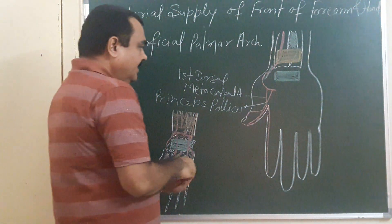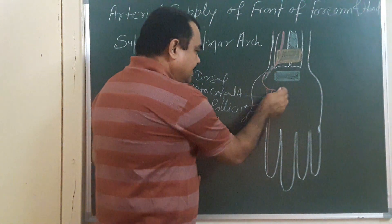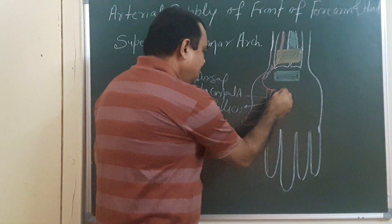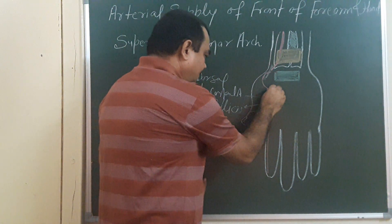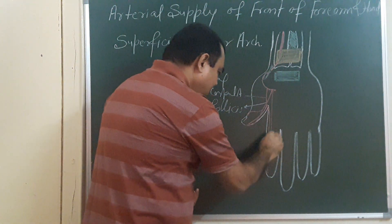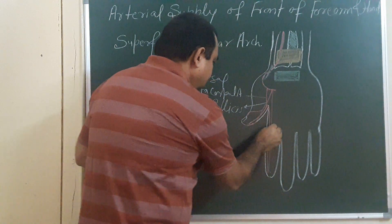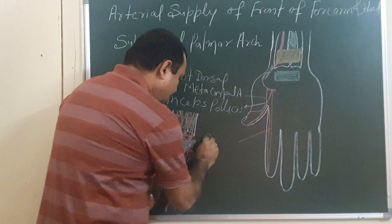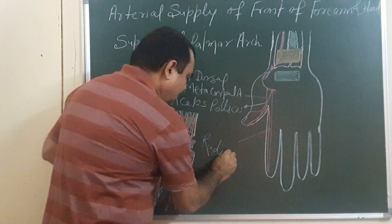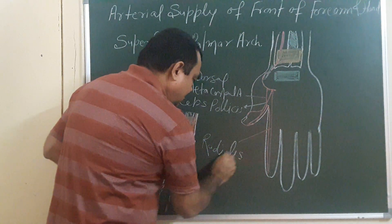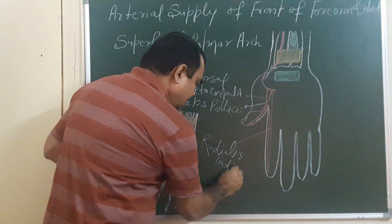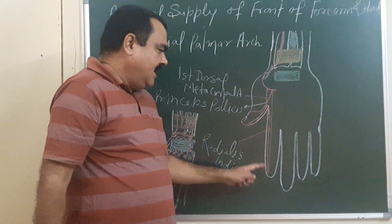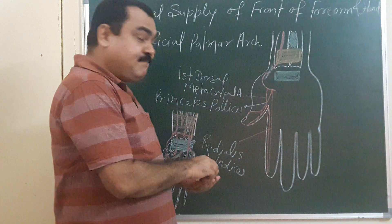Another branch is radialis indicis. It gives supply to the radial side of the index finger on the palmar aspect.